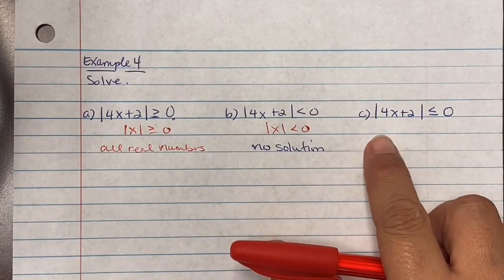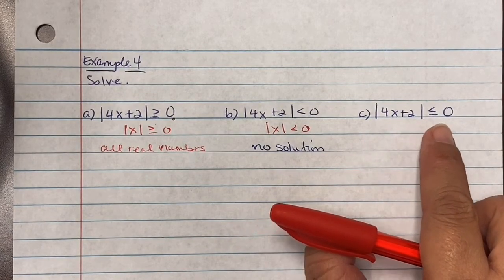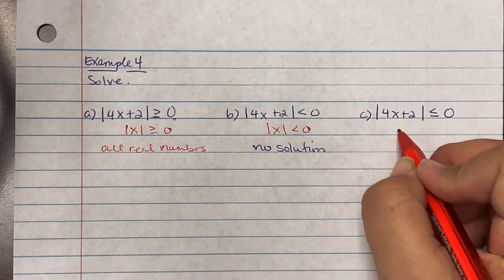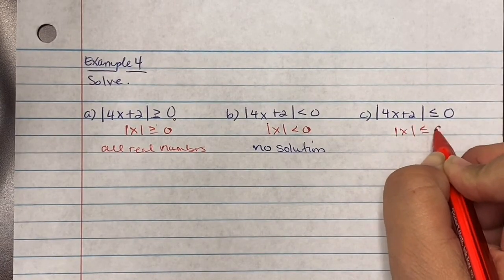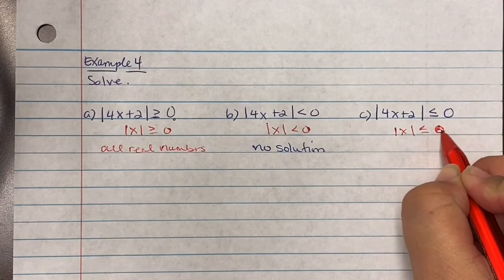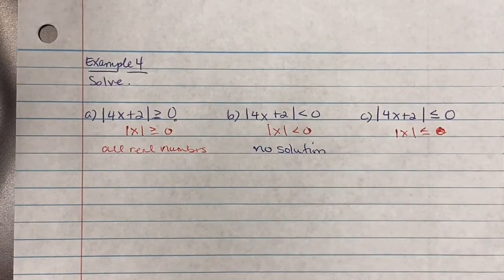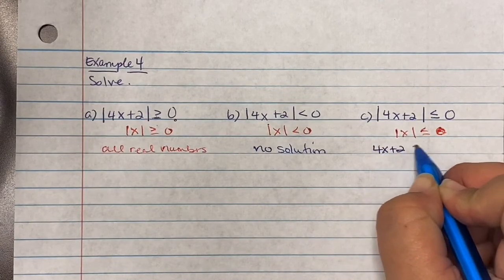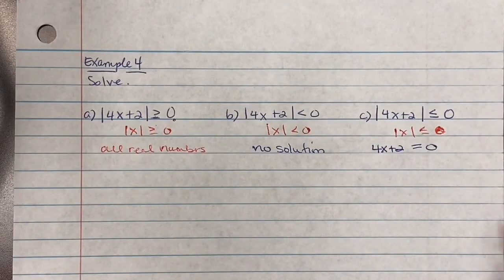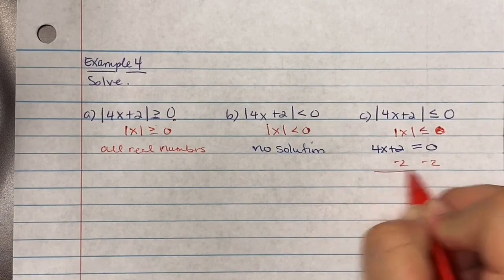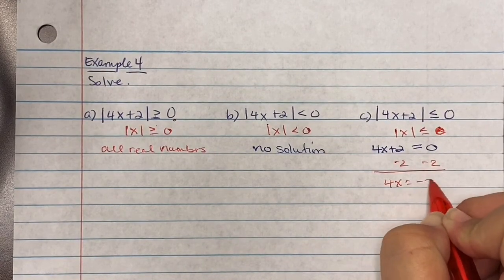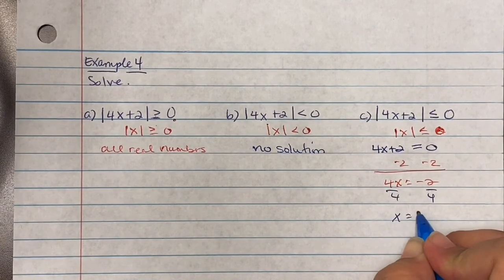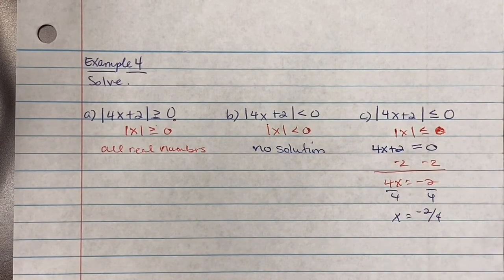Part c: absolute value of 4x plus 2 is less than or equal to zero. This is the 'less than or equal to zero' case. Take the inside and set it equal to zero: 4x plus 2 equals 0. Subtract 2 to get 4x equals negative 2, then divide by 4 to get x equals negative one-half. Always reduce fractions if possible.